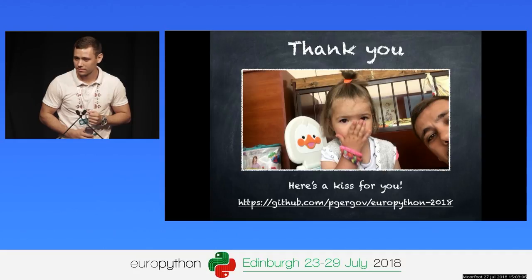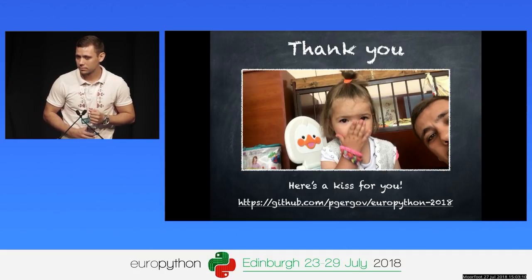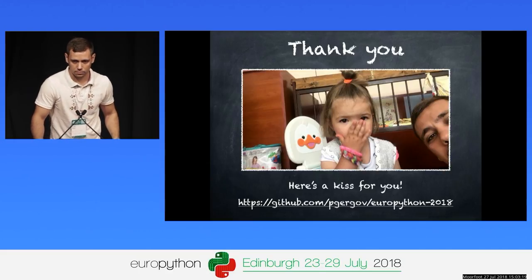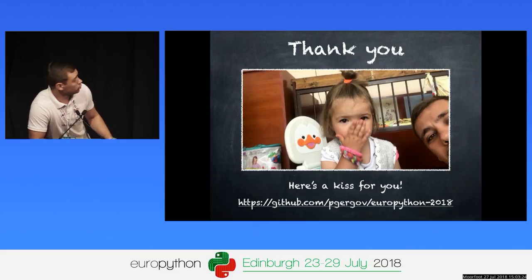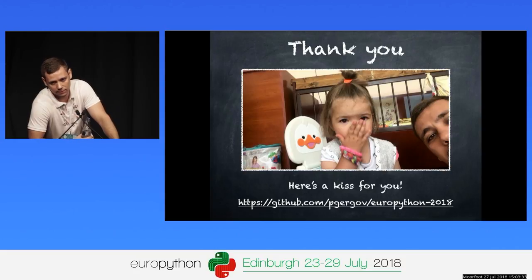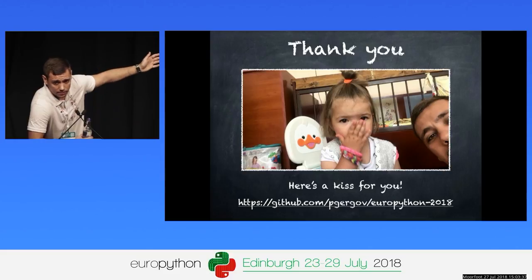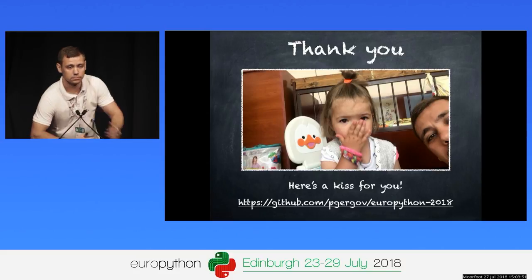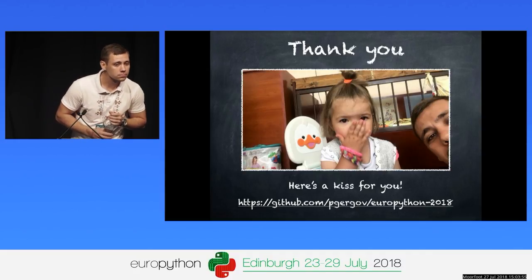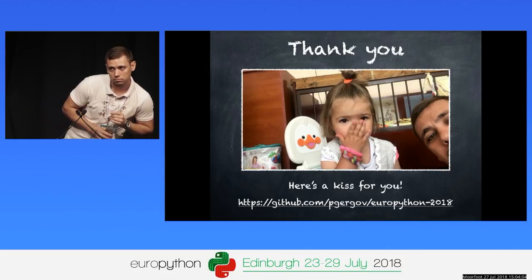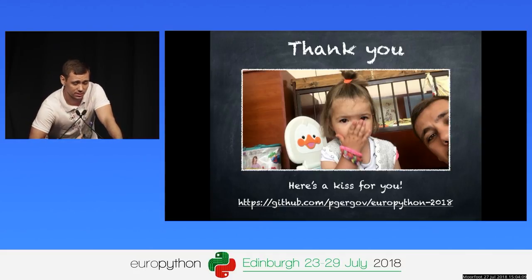Question: Is there a use case for using the generator way, or the asyncio.coroutine or types.coroutine decorators, or are those obsolete and we should just always use async and await? Answer: At the current moment, you should always use async and await. The generators were there because they were needed, but they are not needed anymore. Question: What is the use case for using yield from as opposed to itertools.chain? Answer: I'm not sure, I can't answer that question.